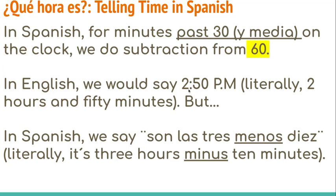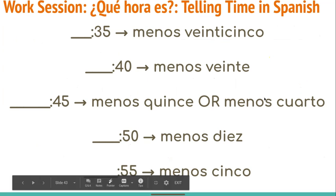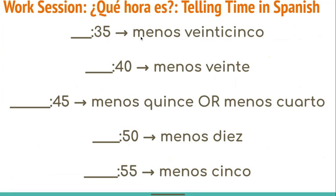So like I said, we'll be doing a lot of subtraction today from the number 60, sesenta. Just a little bit of pronunciation practice. When it is 35 on the clock: menos veinticinco — literally, minus 25. For 40: menos veinte — literally, minus 20.